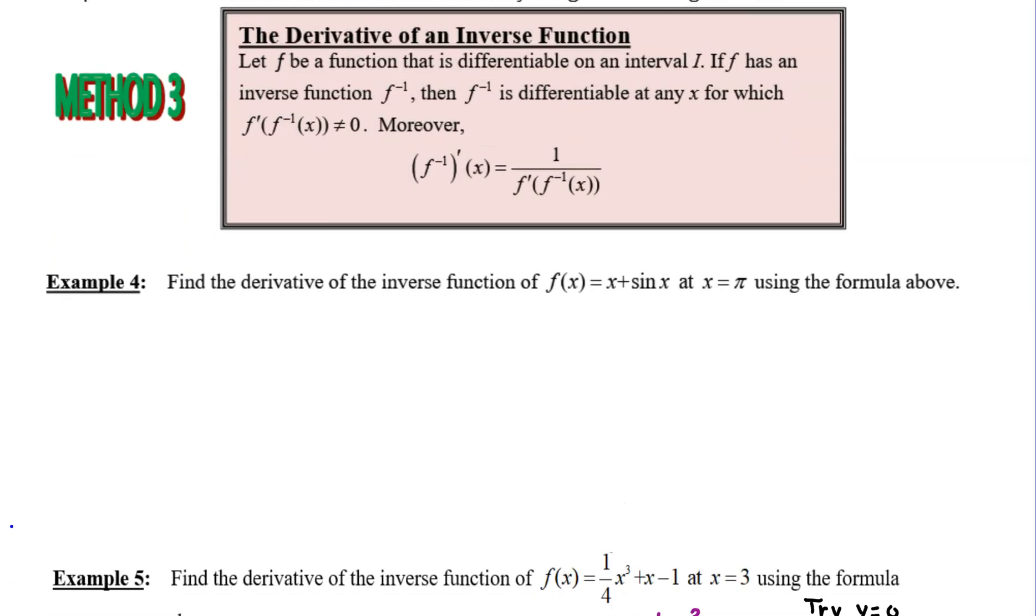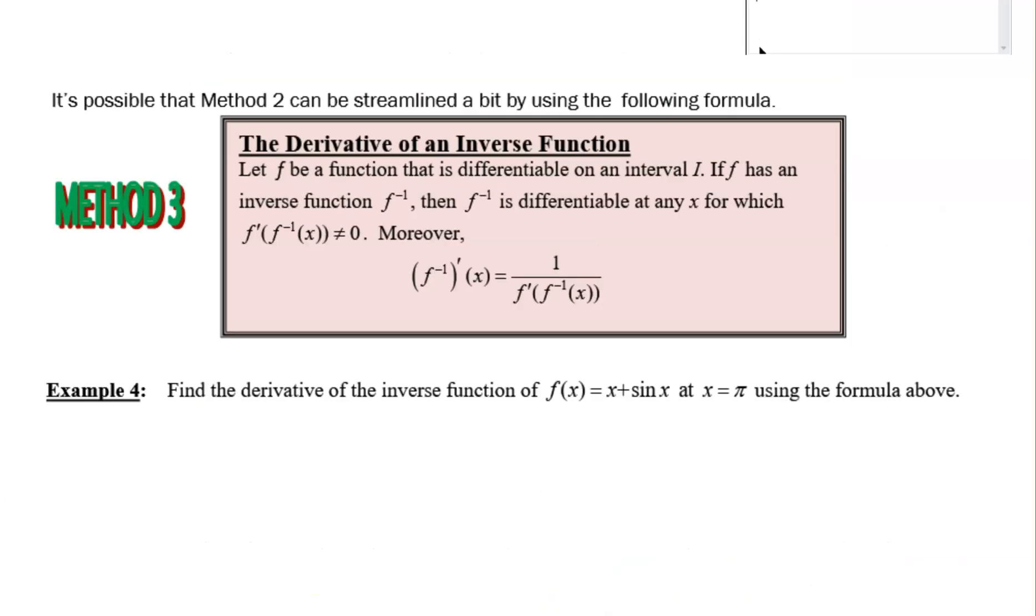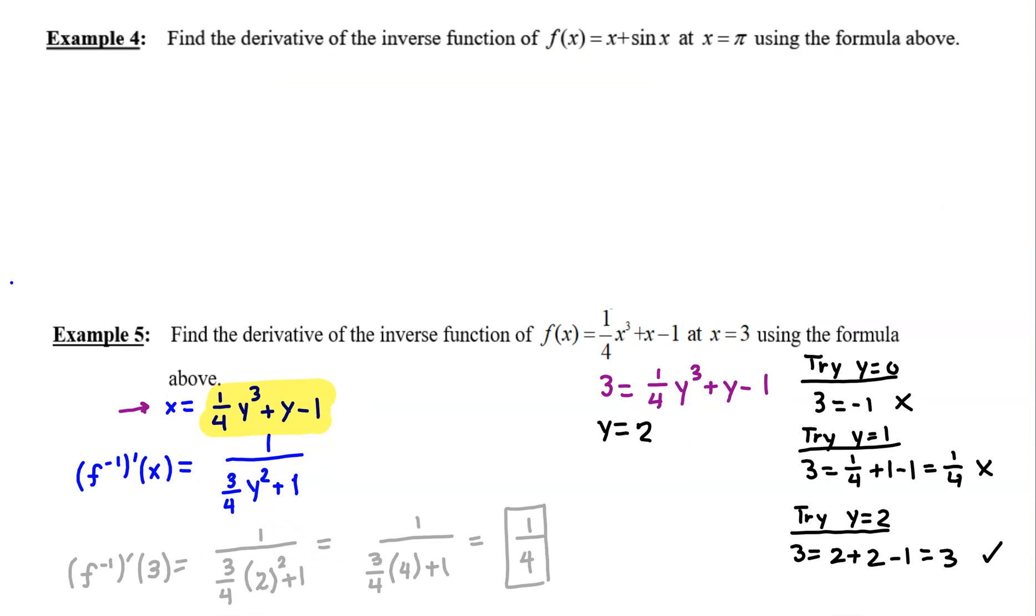And what that'll do is it'll force you to have to use that formula, whereas in my previous two videos where I was using this example for an example five, we could have used our method two which was outlined in a previous video about using implicit differentiation. But when you've got a table of values that option's off the table, so I definitely encourage you to stick around for that video coming up and we'll see you next time.